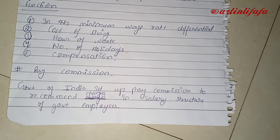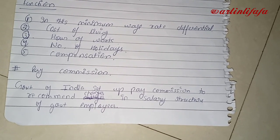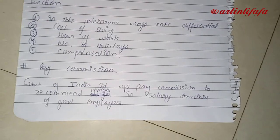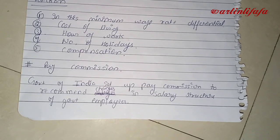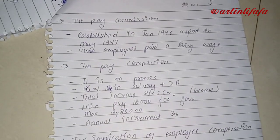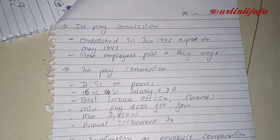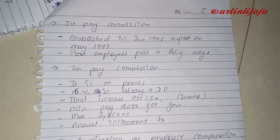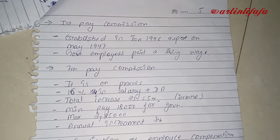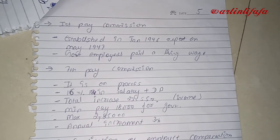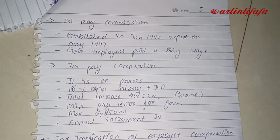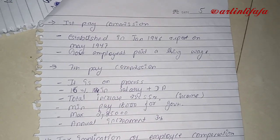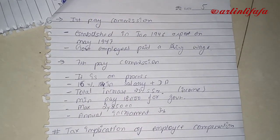The pay commission is set up by the Government of India to recommend changes in the salary structure of government employees. We have had 6 pay commissions already, and the 7th is coming. The first pay commission was established in January 1946 and submitted its report in May 1947. It recommended that government employees should receive a living wage.